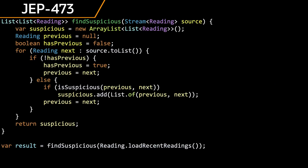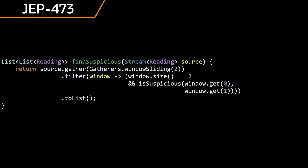Stream Gatherers also enters second preview in JDK 23 with JEP 473. Stream Gatherers aim to provide the new gather operation, an intermediate operation that gives developers considerable flexibility in transforming the contents of a stream. Basically, it is the intermediate version of collect.